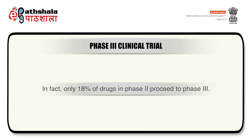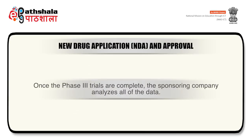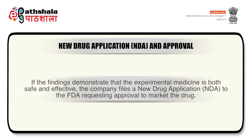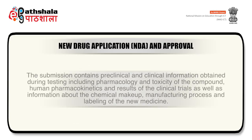In fact, only 18 percent of drugs in Phase 2 proceed to Phase 3 stage. Once the Phase 3 trials are complete, the sponsoring company analyzes all the data, and if the findings demonstrate that the experimental medicine is both safe and effective, the company files a New Drug Application (NDA) to the FDA requesting approval to market the drug. The submission contains pre-clinical and clinical information including pharmacology and toxicity of the compound, human pharmacokinetics, results of the clinical trials, as well as information about the chemical makeup, manufacturing process, and labeling of the new medicine.